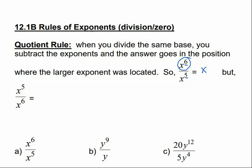But if we have x to the 5th over x to the 6th, we're still going to subtract the smaller number from the larger number. 6 minus 5 is 1, but since the biggest exponent is on the bottom, our answer is going to go in the denominator.